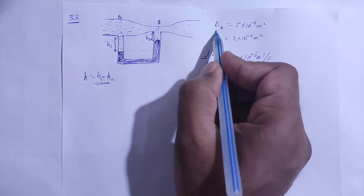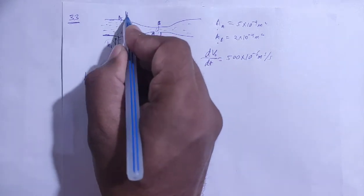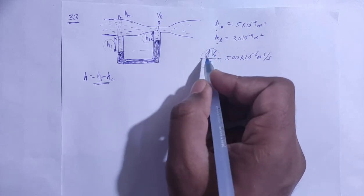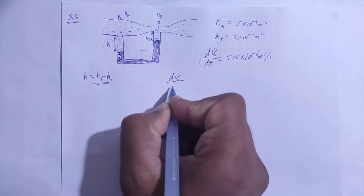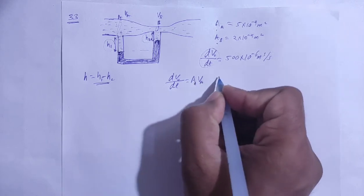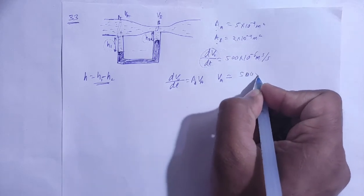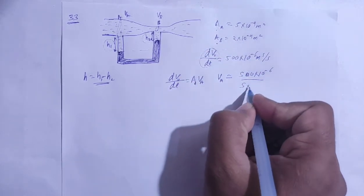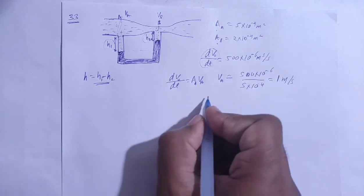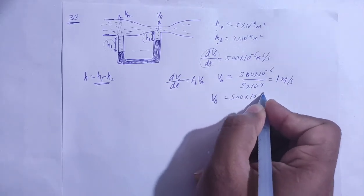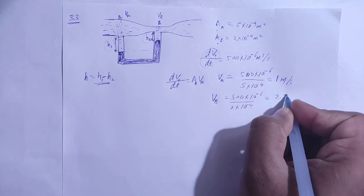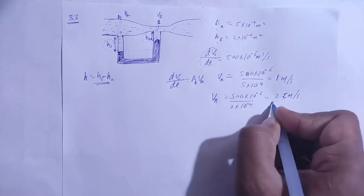First, we find the speed at A and speed at B using the volume flow rate. We have dV/dt = A × V (area of cross section times speed). Velocity at A: 500×10⁻⁶ divided by 5×10⁻⁴ = 1 meter per second. Velocity at B: 500×10⁻⁶ divided by 2×10⁻⁴ = 2.5 meters per second.